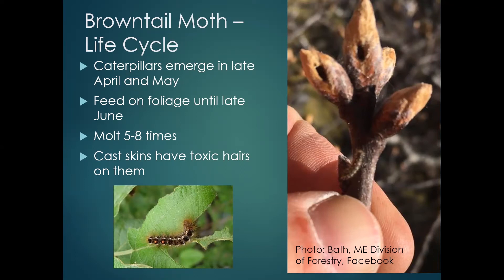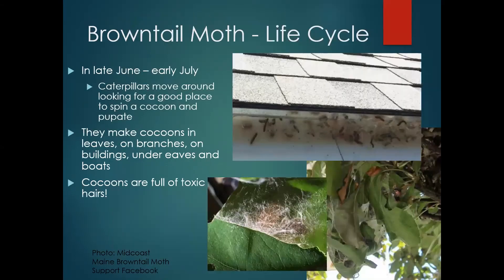That's probably one of the more unpleasant times in the browntail moth life cycle. In that late June/early July time period, they're going to be fully grown — about the size of your pinky — and looking for a place to pupate. Typically it's basically any sheltered area: under the eaves of your house, vehicles that haven't moved in a while, boat trailers, RVs, stuff like that — but also right on the host foliage.